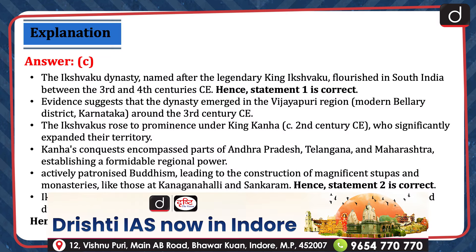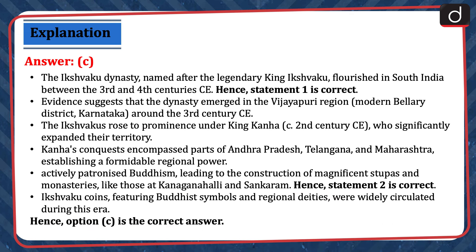The Ikshwaku dynasty, named after the legendary king Ikshwaku, flourished in South India between the 3rd and 4th centuries CE. Hence, statement 1 is correct. Evidence suggests that the dynasty emerged in the Vijaypuri region, modern Bilari district Karnataka, around the 3rd century CE. The Ikshwakus rose to prominence under King Kanha, who significantly expanded their territory encompassing parts of Andhra Pradesh, Telangana, and Maharashtra. They actively patronized Buddhism, leading to the construction of magnificent stupas and monasteries like those at Kanjannhali and Shankaram. Hence, statement 2 is correct. Ikshwaku coins featuring Buddhist symbols and regional deities were widely circulated during this era. Hence, option C is the correct answer.